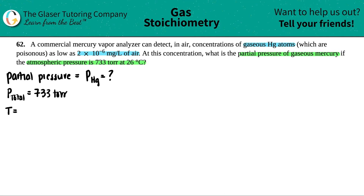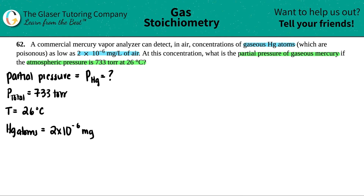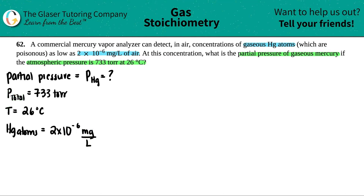The temperature is 26 degrees Celsius. They also tell us that the commercial mercury vapor analyzer can detect concentrations of gaseous Hg atoms as low as 2 times 10 to the negative 6 milligrams per liter of air. So we have: Hg atoms = 2 × 10⁻⁶ mg/L. We're looking for the partial pressure of Hg, and we have total pressure, temperature, and this concentration.